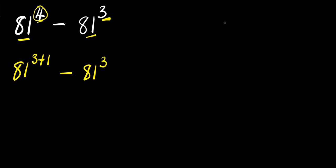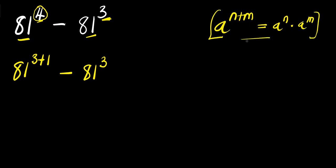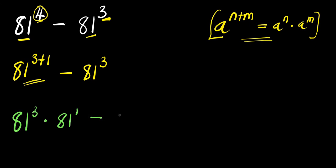Now if you have a power n plus m, this equals a to the power of n times a to the power of m. I apply this identity right here. That means I'm simply going to have 81 to the power of 3 times 81 to the power of 1, minus 81 to the power of 3.